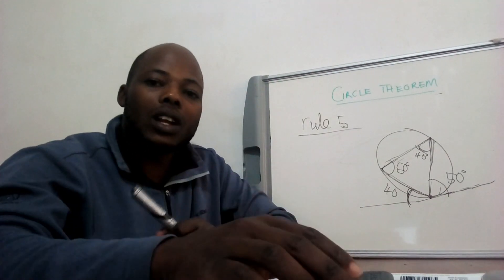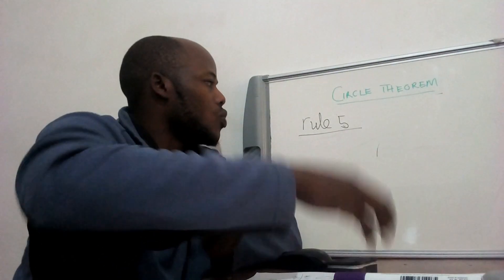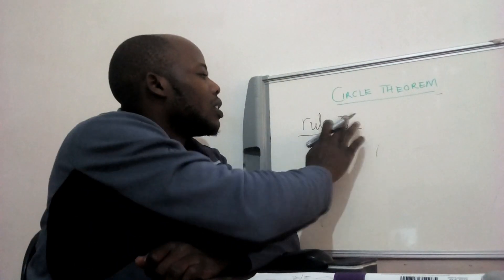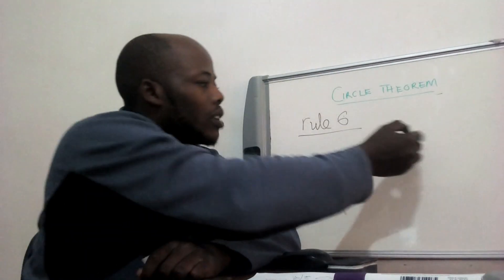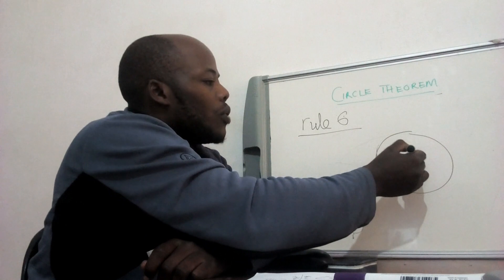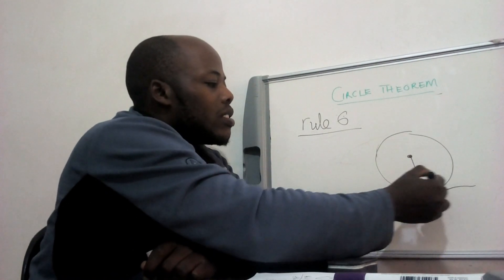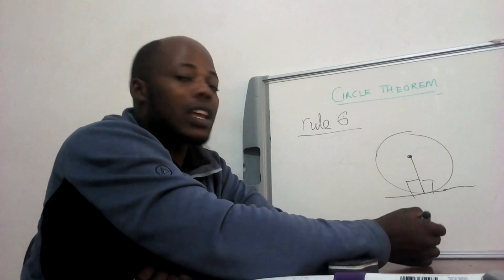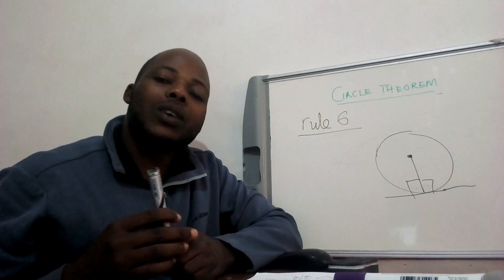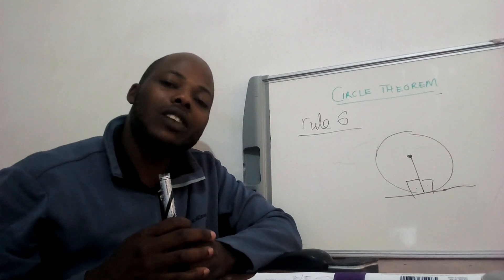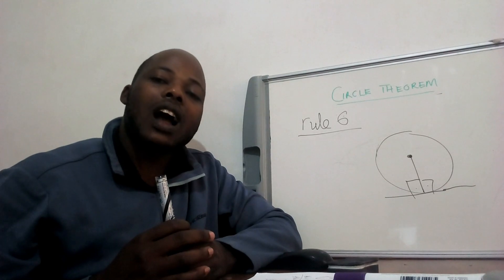Let's move to property number six. Rule number six says: if you have a radius and a tangent line, the angle between them is 90 degrees on both sides. We say a radius meets the tangent line at a 90-degree angle. These properties may help you answer exam questions.